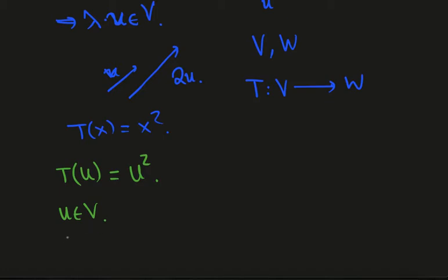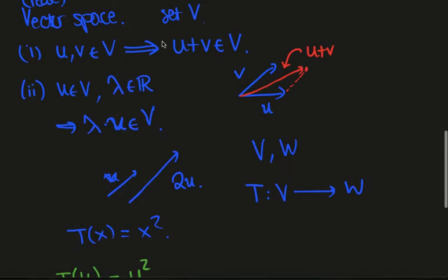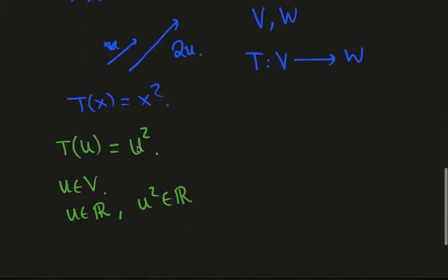If u is real, so u is a real number, then I can make sense of u squared. u squared will be a real number. But if I take a more abstract example of a vector space, in general, I cannot multiply vectors. These two conditions do not tell me how to multiply arbitrary vectors. They tell me how to scale vectors by a scalar, but not multiply arbitrary vectors. So we don't want to consider maps of this form.